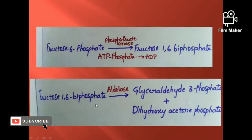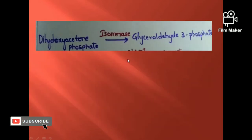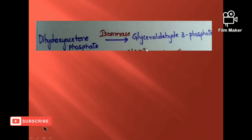In the fourth step, fructose-1,6-bisphosphate gives rise to glyceraldehyde-3-phosphate. In the fifth step, dihydroxyacetone phosphate is converted to glyceraldehyde-3-phosphate in the presence of isomerase. So overall, 2 molecules of glyceraldehyde-3-phosphate are formed.